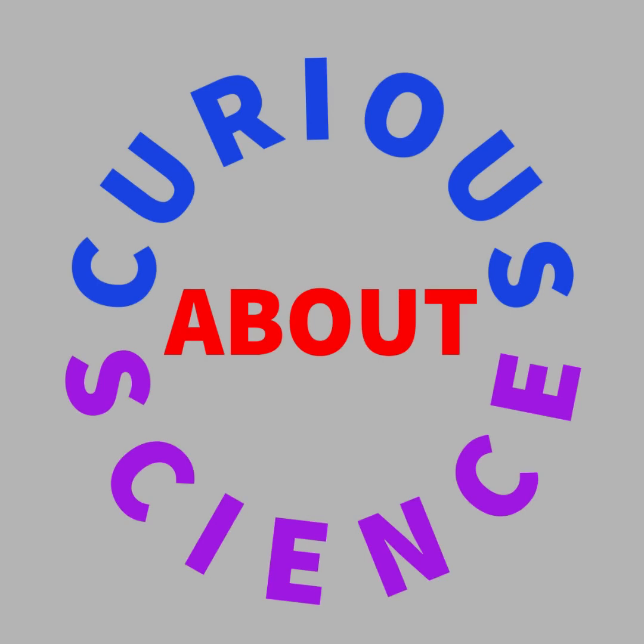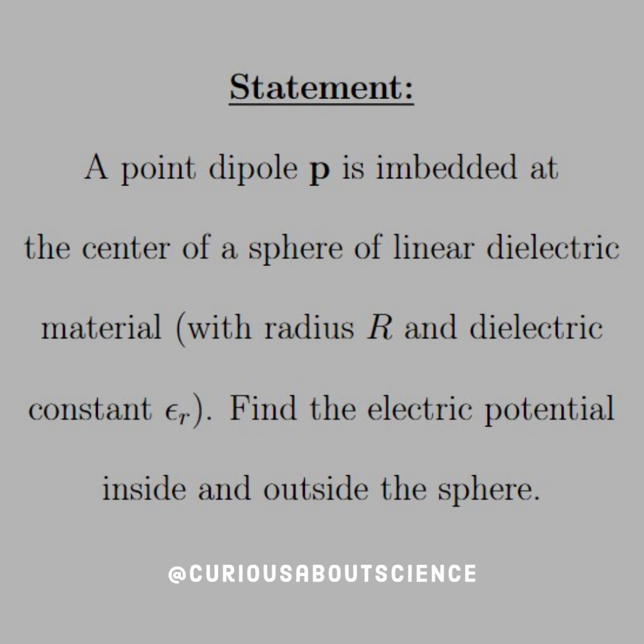Hello all! We've got a pretty hefty boundary value problem, so let's get this started. The statement reads, a point dipole P is embedded at the center of a sphere of linear dielectric material with radius big R and dielectric constant epsilon R. Find the electric potential inside and outside the sphere.